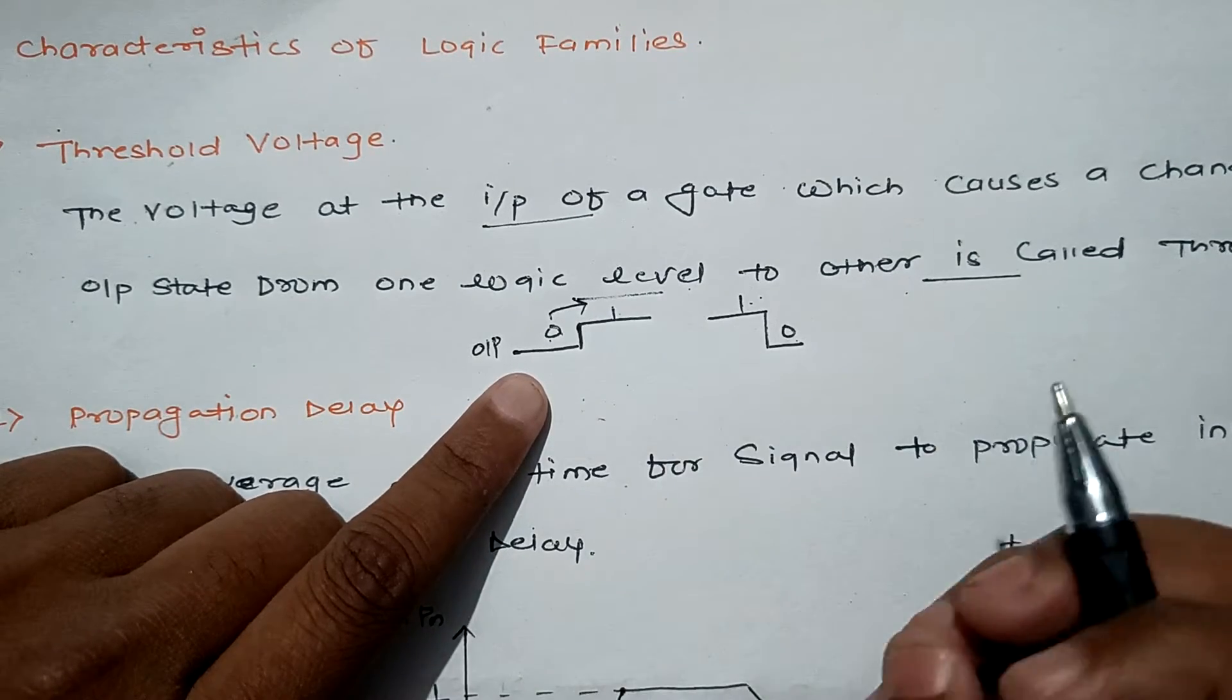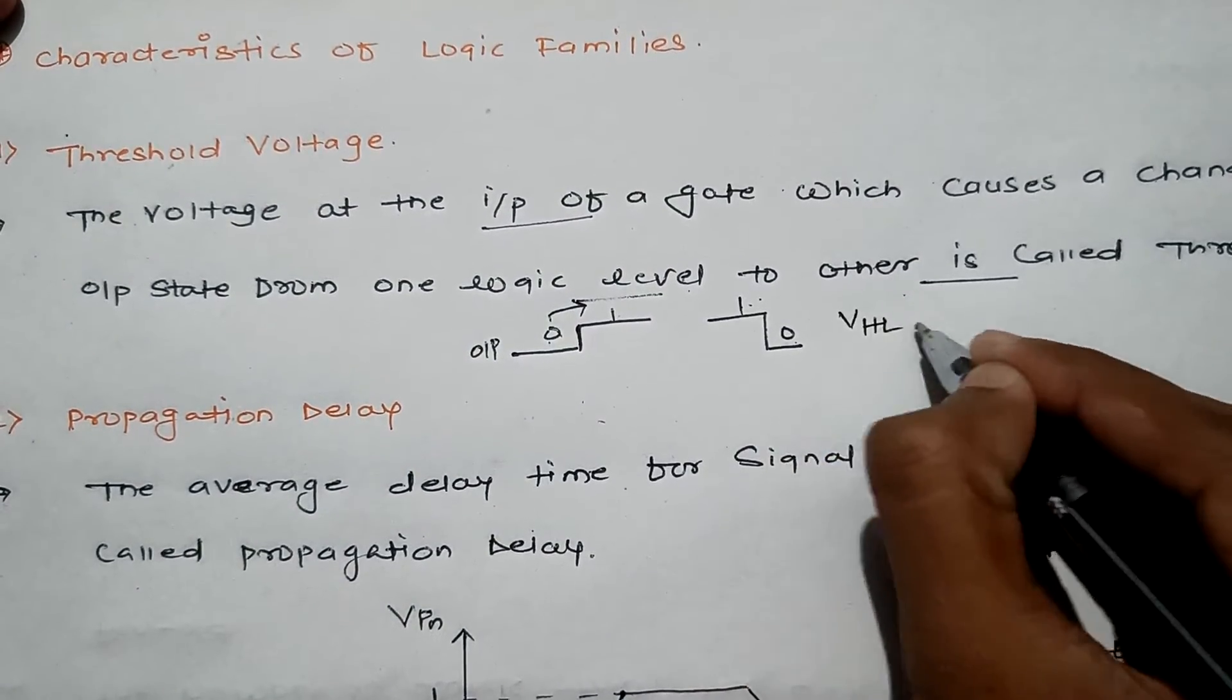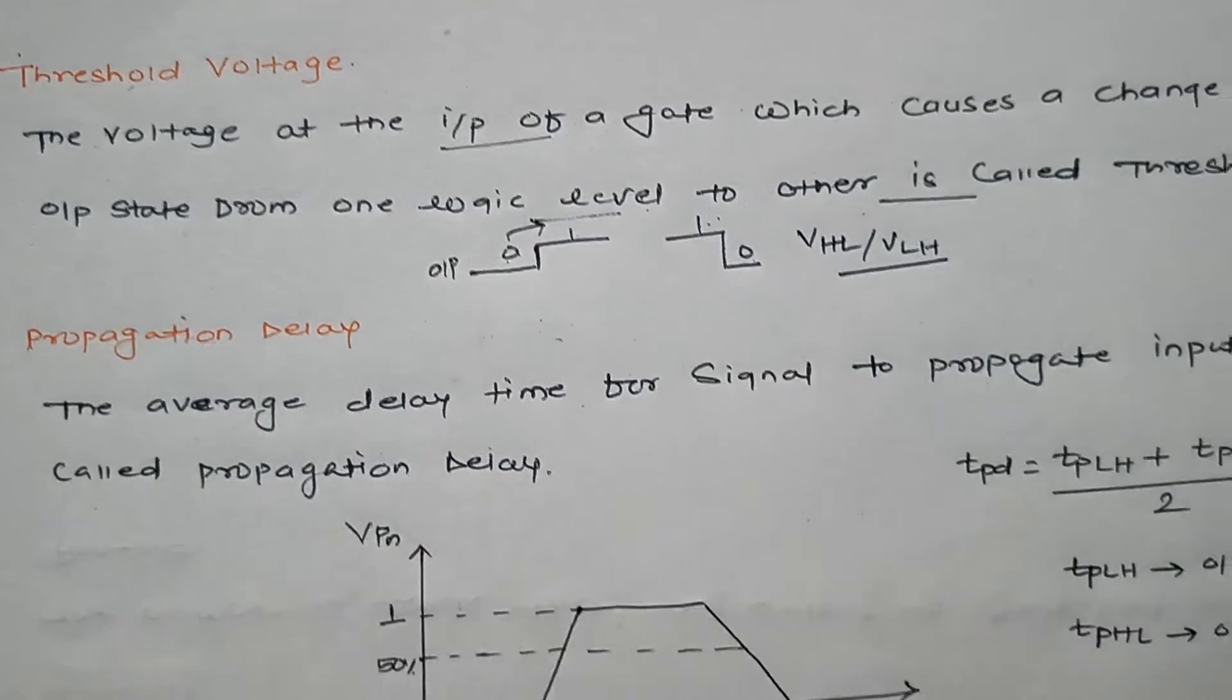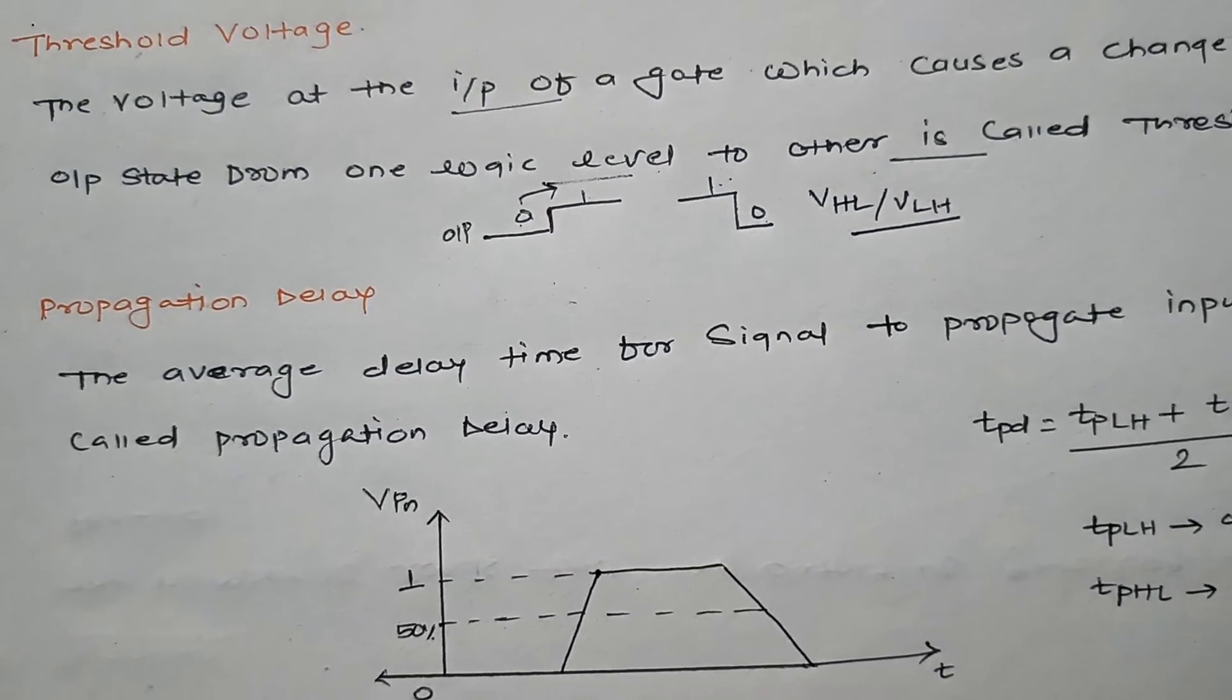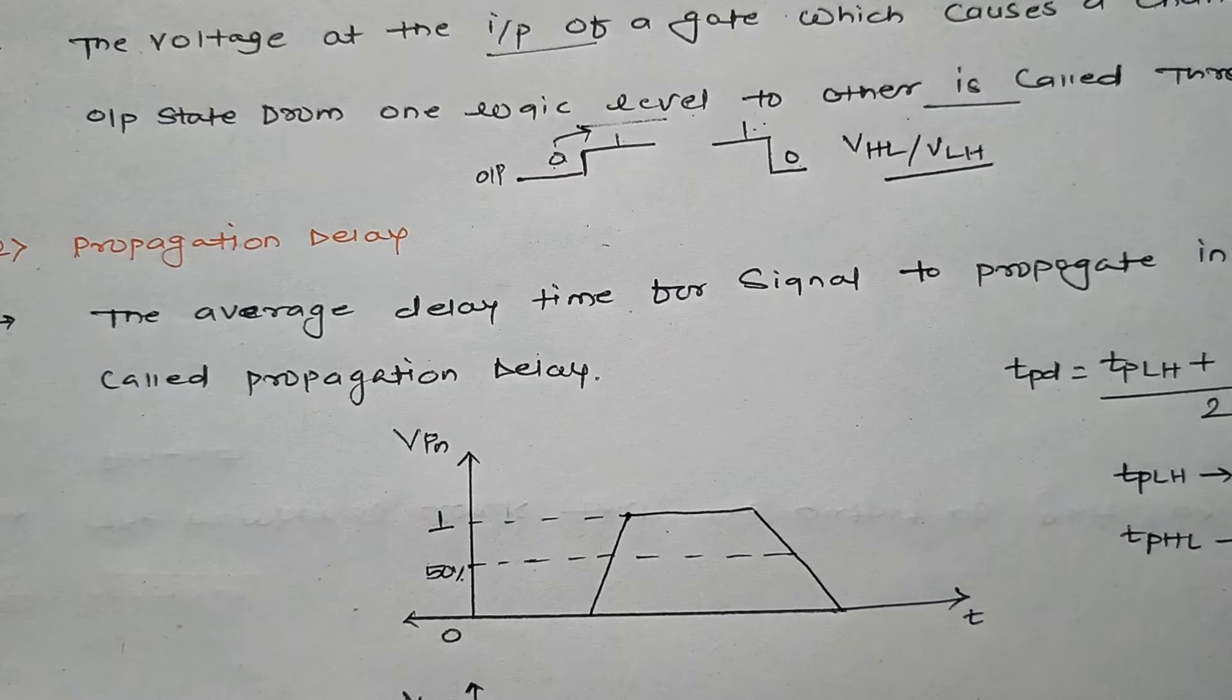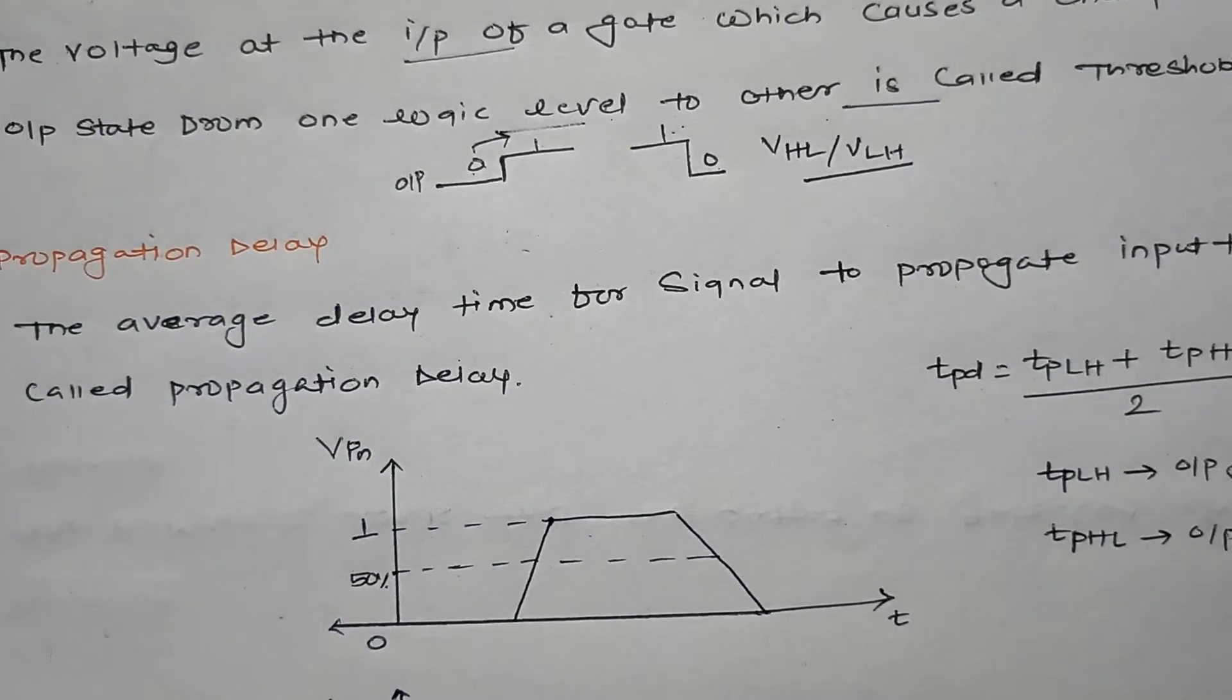This voltage is called threshold voltage. It may be VHL or VLH - high to low voltage or low to high voltage. Based on that, we will go for the second important characteristic which is called propagation delay.